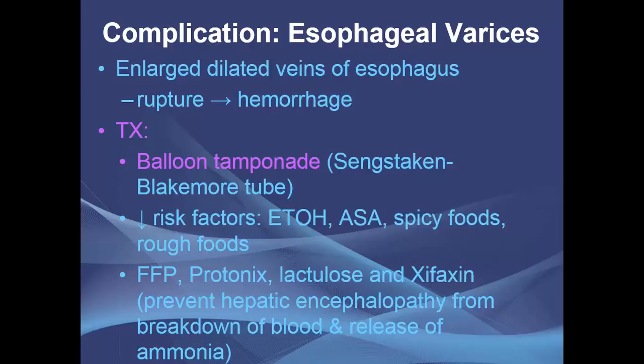Treatment of esophageal varices includes balloon tamponade with the Sengstaken-Blakemore tube. Risk factors to decrease include alcohol use, aspirin, spicy foods, and rough foods. Fresh frozen plasma, protonics, lactulose, and rifaximin can be given to prevent hepatic encephalopathy from the breakdown of blood and release of ammonia.